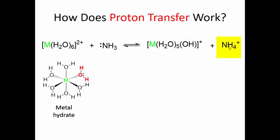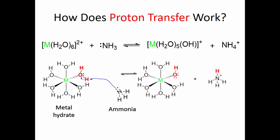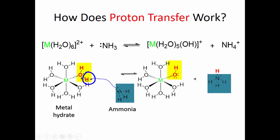This is what the metal hydrate looks like — it's an octahedral complex with six waters around it. Ammonia is going to give that pair of electrons to hydrogen, and then the O-H bond is going to break and those electrons go back to oxygen. So here is the OH — this water lost the hydrogen, so now it becomes OH⁻. And the NH₃ has gained a hydrogen, so now it becomes NH₄⁺.